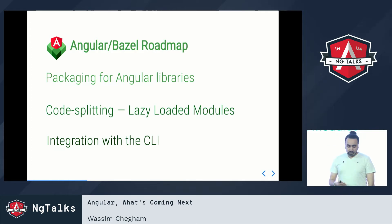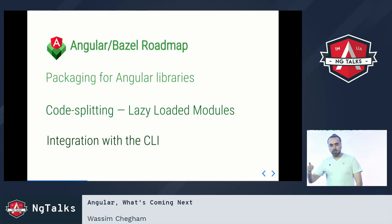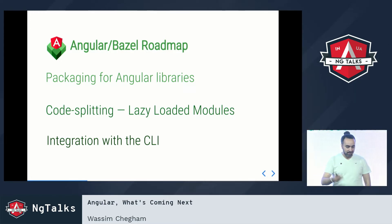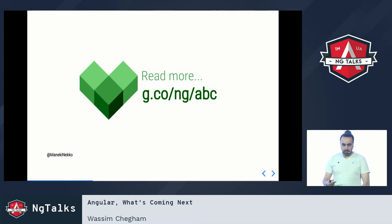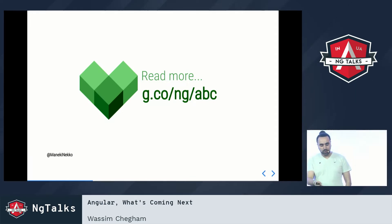The roadmap for Bazel is pretty simple. The Angular team wants us to use Bazel to build our large applications, but there are a couple of features that still need to be implemented — like packaging Angular libraries with Bazel, code splitting, lazy loading Angular modules, and getting it to work with the CLI for everyday projects. If you want to know more, there's a detailed Google Doc by one of the Angular team members. The project is called ABC.